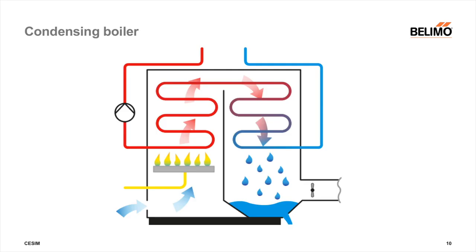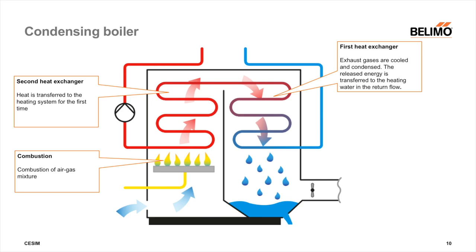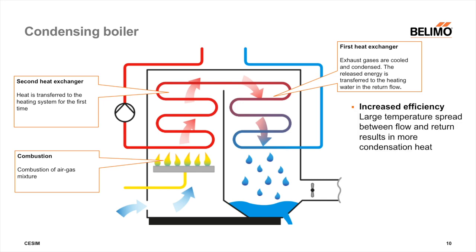A condensing boiler is a boiler for hot water heating systems which almost completely uses the energy content of the fuel used. In condensing boilers, the gas in the first heat exchanger is cooled as much as possible to extract the condensation heat of the water vapor contained in the gas. In the second heat exchanger, the water is reheated by combustion. The calorific value effect is achieved by low system temperatures, and due to the low return temperature, the gas is cooled and condensed.